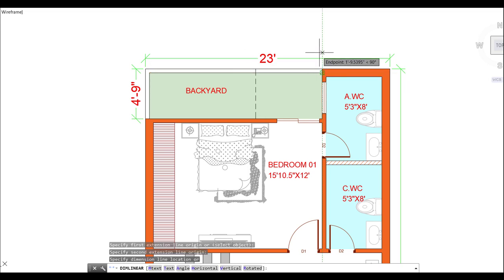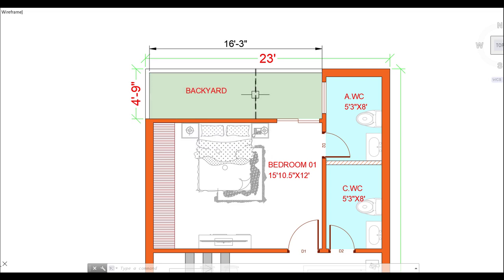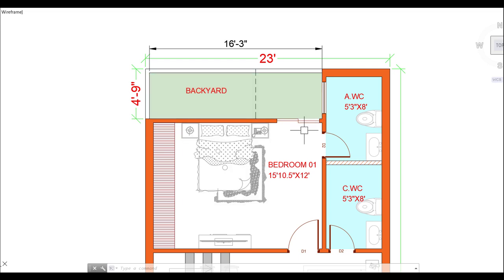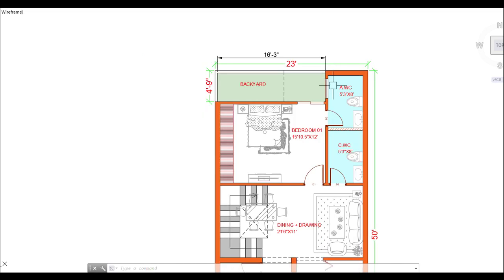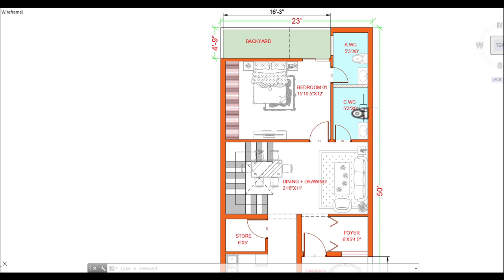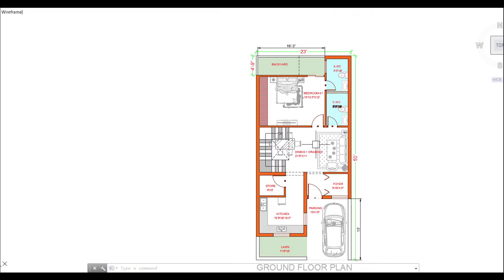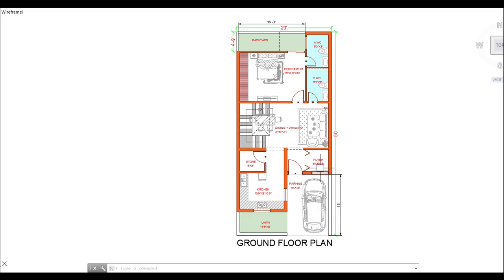There is also a living area of 16 feet 3 inches by 4 feet 9 inches. If you want to keep your washing machine here, you can. Just behind the sliding door is your backyard where plantation will look good. The attached bathroom is very big, at 5 feet 3 inches by 8 feet. There is also a guest bathroom of the same size — 5 feet 3 inches by 8 feet. This completes your ground floor plan.